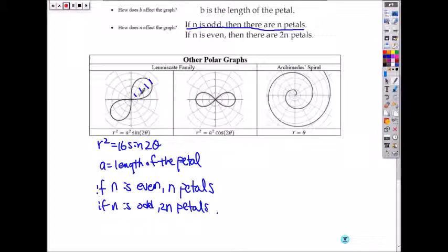If n is even, then you just have n petals. You remember roses, you double the n number if it's even. But here, if it's even, it's just even. If it's odd, then you double the petal.